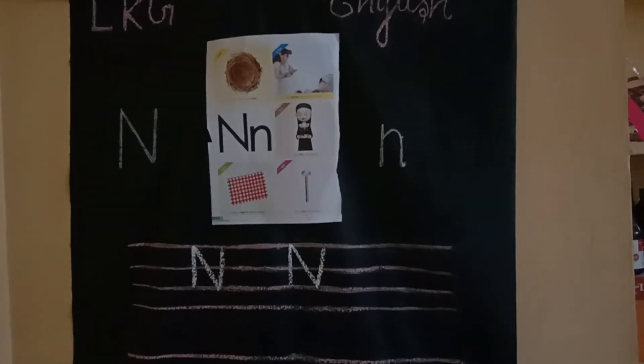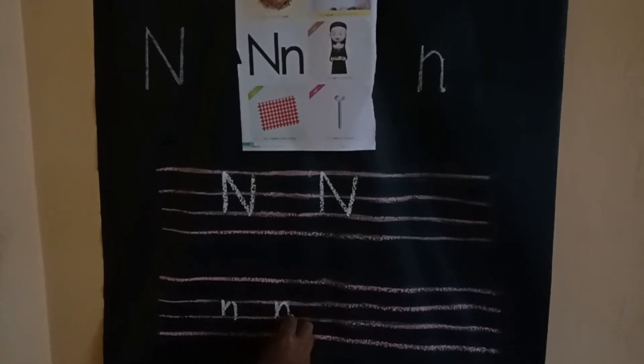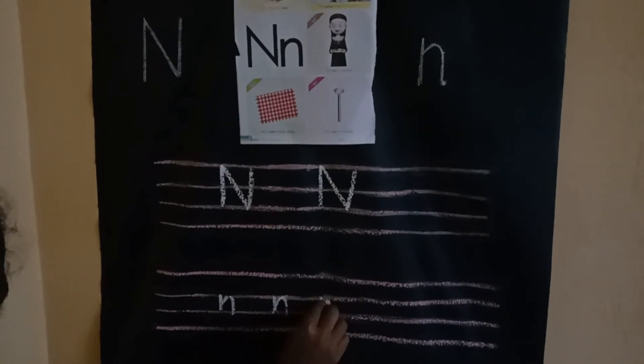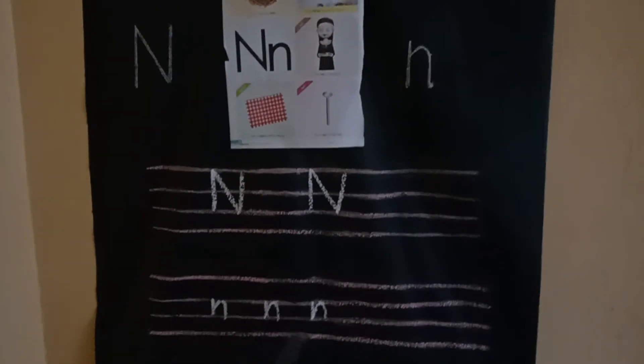Next, how to write small letter N. First, you should select the middle two lines. Okay children, middle two lines. First, you should write a standing line, then a downward curve. Standing line, then downward curve. Yes, this is a small letter N.